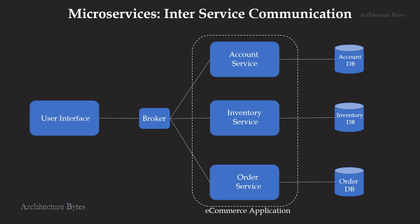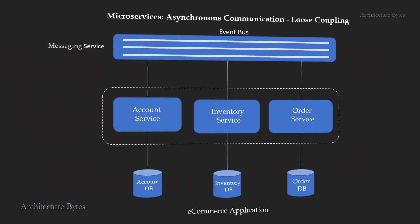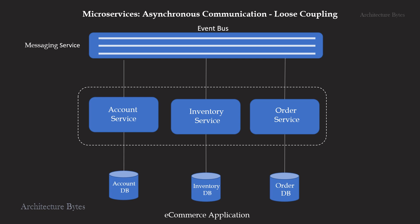Inter-service communication in microservices — essentially, the question is: how do you invoke one service from another, and is it a good idea to access data of another service directly? In other words, how do you ensure your services are not tightly coupled? You can have services communicate with each other asynchronously, for example via a messaging service. In this example, we have three queues: an account queue, an inventory queue, and an order queue. If the order service wants to send a message to the inventory service, it can drop the message into the inventory queue. The inventory service will pick up the message and act on it. This results in loose coupling between microservices.